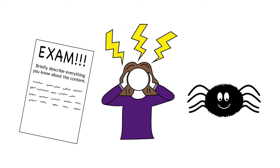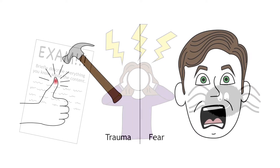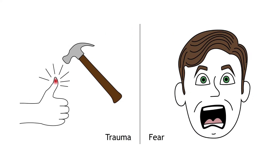Stress is often split into two categories: physical and psychological. Physical stress can be caused by trauma, illness, or injury. Blood loss, dehydration, or allergic reactions are examples of physical stressors.